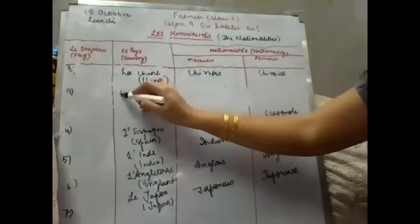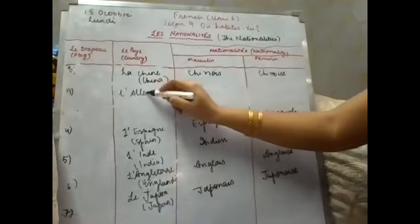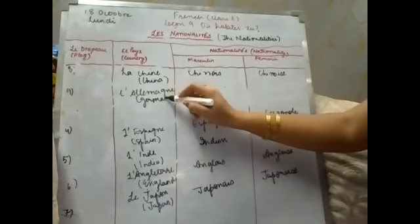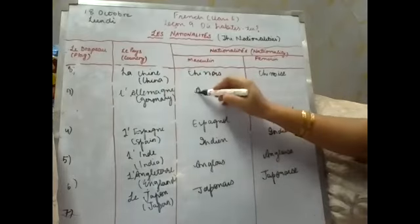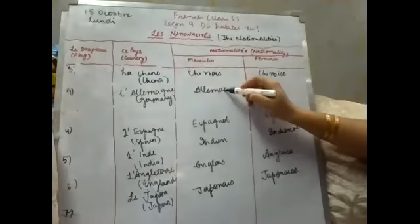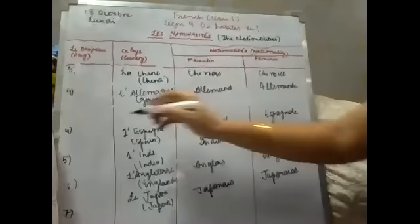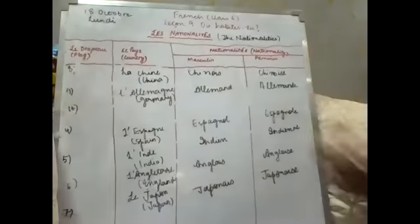Next, the ninth one is your Allemagne. Allemagne is Germany. The nationality is Allemand and Allemande.